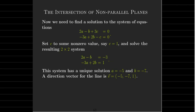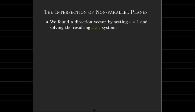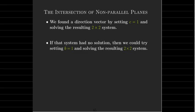So again, we set c equal to 1. It's possible that that's a bad assumption, that we can't do that. If we get a solution to that system of equations, what we would do is we would try setting b equals 1 and see if we get a solution.